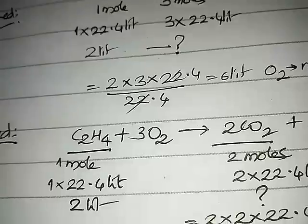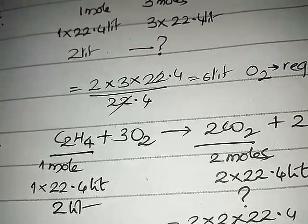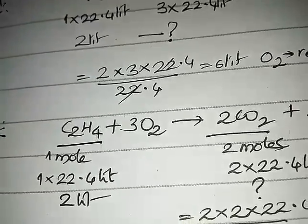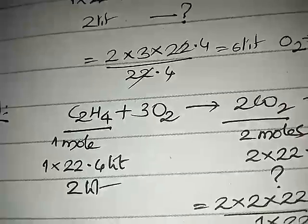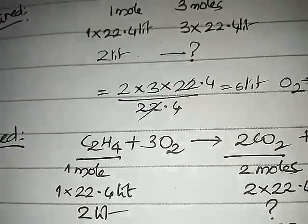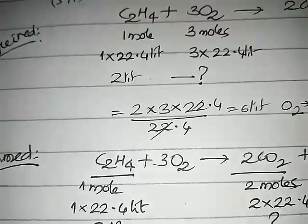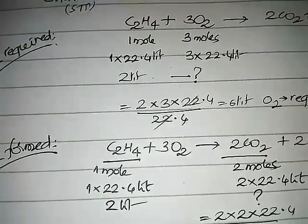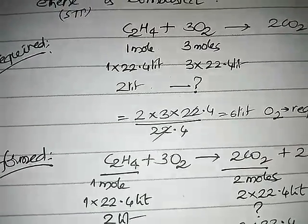Here you can see one mole requires and gives two moles of CO2, that means one liter gives you two liters. And the question is asked about two liters, so it will give you four liters. So there is no need to put 22.4 and cancel those, simply the mole ratio is nothing but the volume ratio.